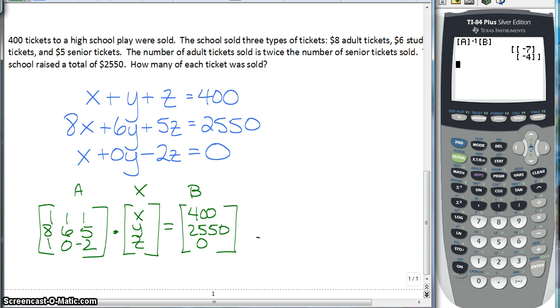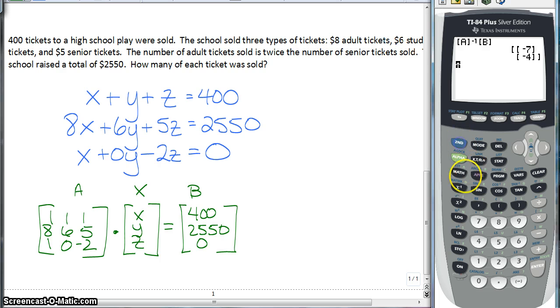We are going to go to our calculator, and we're going to press second matrix. We are going to go edit matrix A, which is now a 3 by 3. So we have 3 by 3, and then we make sure we enter very carefully. 1, 1, 1, 8, 6, 5, and 1, 0, negative 2. And we have our matrix A.